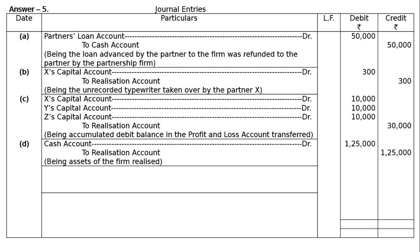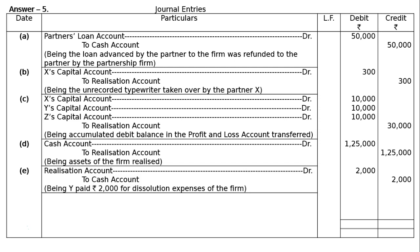Part E: Y, who undertakes to carry out the dissolution proceedings, is paid rupees 2,000 for the same. Entry: Realization Account debited to Cash Account, rupees 2,000, being Y paid rupees 2,000 for dissolution expenses. Note: Y here may not be a partner, or if Y is a partner, the payment is treated as an ordinary expense.